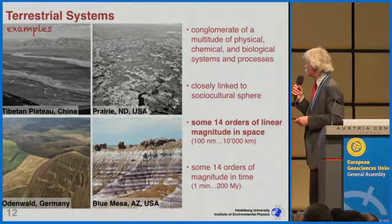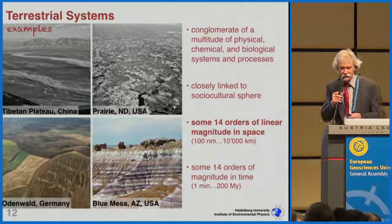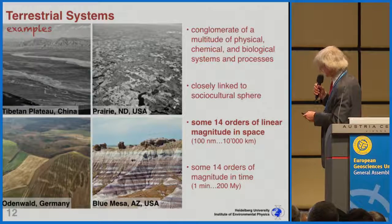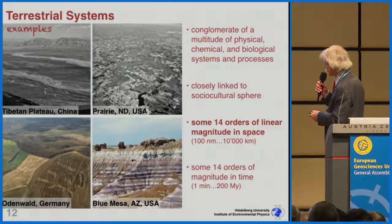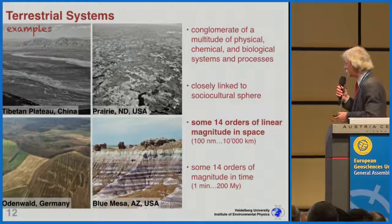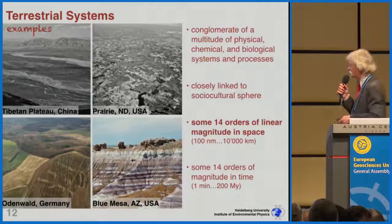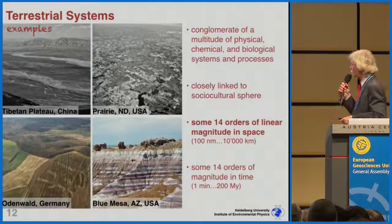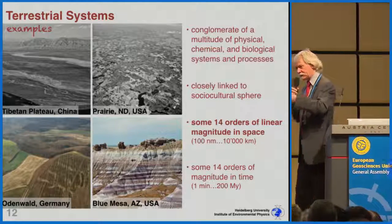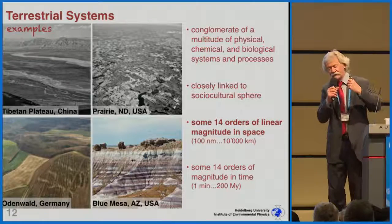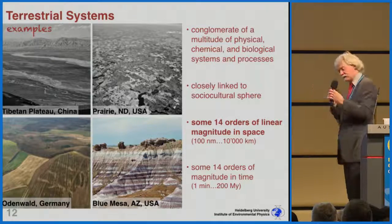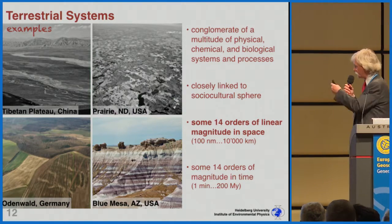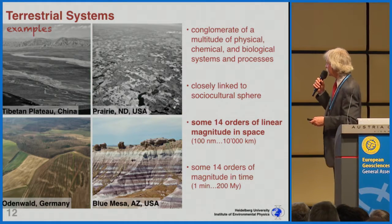If you look at time, we also find something like 14 orders of magnitude — from the order of a minute characteristic for a landslide, to something like 200 million years for the formation of soil layers. Those layers were deposited 200 million years ago, which is roughly half the time since life on land surfaces on this planet evolved. So we are really looking very deeply back in time.